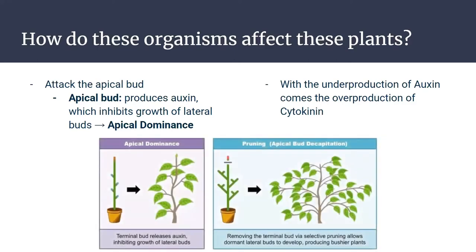In this figure, you can see the role the apical bud plays in the growth of this plant. With the apical bud, the lateral stems are short with few leaves, while the plant without the apical bud has lateral stems that are longer and have more leaves, leaving a bushier appearance.